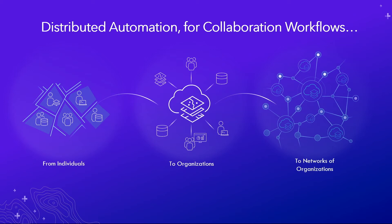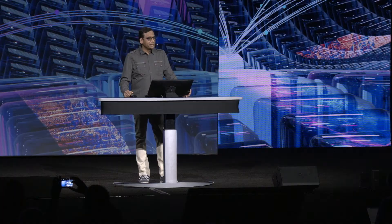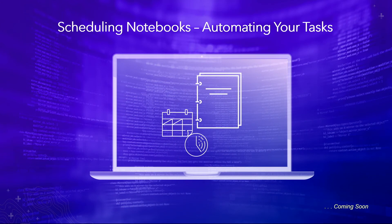And then there's distributed automation — a new class of automation enabled by distributed collaboration, where you connect systems together across individuals, organizations, and multiple networked organizations. If you drop data in one place, it shows up in another. Something new and exciting is the ability to have notebooks within the platform. As of the current shipping software, you can execute these notebooks, and coming soon is the ability to schedule them at regular intervals — very powerful for automation tasks.